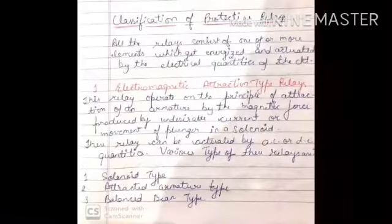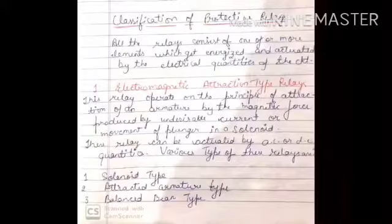In my previous lecture I told you about the protective relay. A protective relay is used for transmission line protection. I use a number of components like current transformer, potential transformer, power transformer, circuit breakers, and tripping coils.